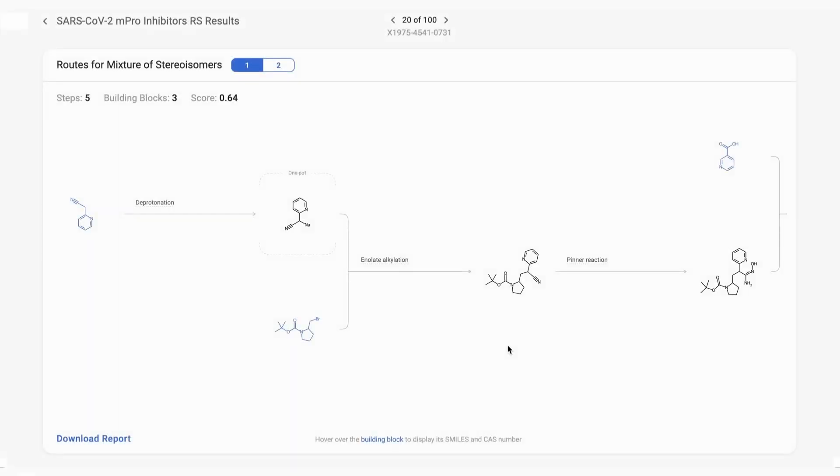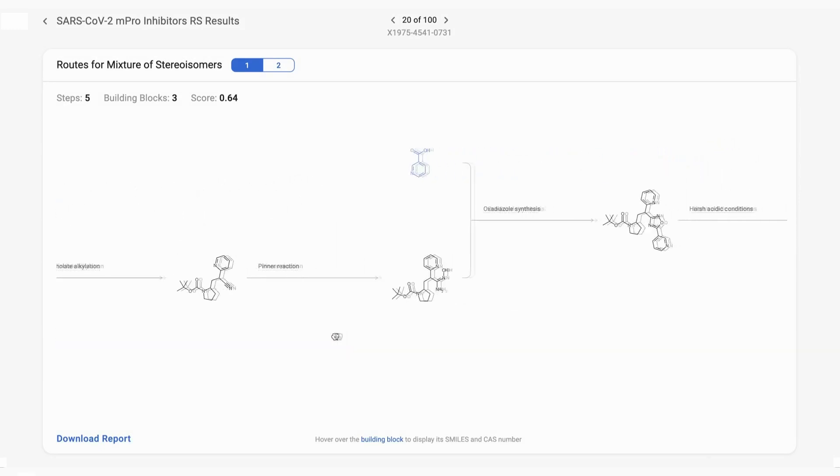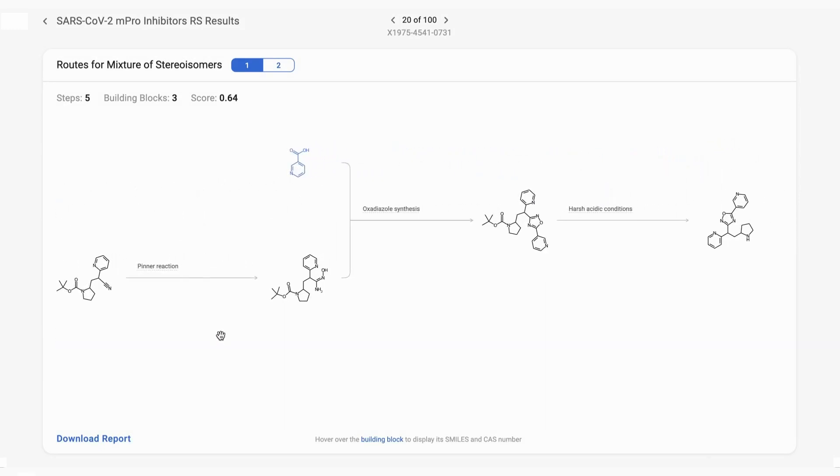The displayed route acts as an excellent demonstration of the analytical reasoning of the retrosynthesis engine. It has considered functional group compatibility and their susceptibility to reaction conditions while building the route.